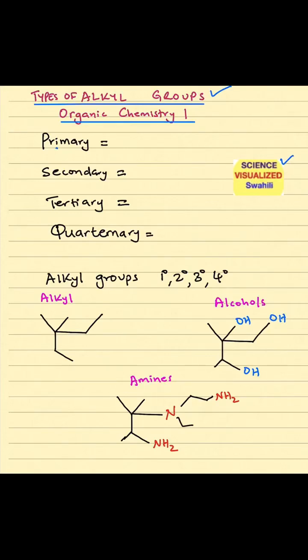The first type is primary alkyl group, and we use this shorthand — 1° — where the superscript zero means primary. Secondary is 2°, so that's secondary. Anytime you see that, that means secondary.